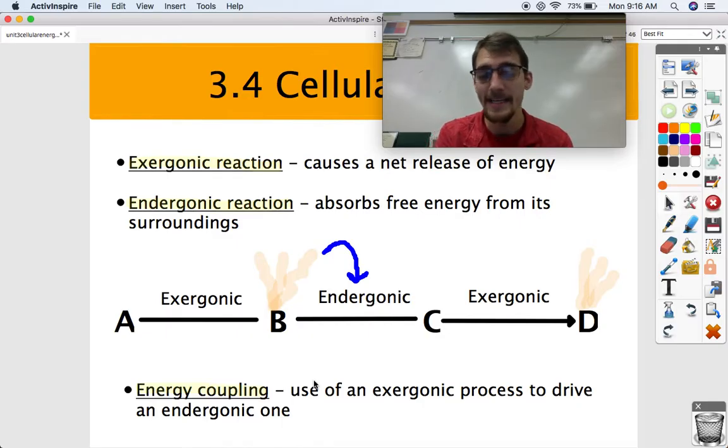An exergonic reaction causes a net release of energy, which means it might take a little energy to get the reaction started, but it's going to release more energy than what it used. And an endergonic reaction is the opposite. It absorbs free energy from its surroundings, so it takes in more energy than what it releases. So an endergonic requires more energy, an exergonic releases more energy.